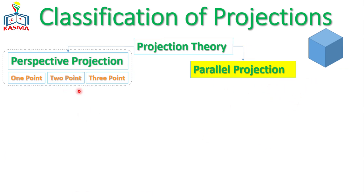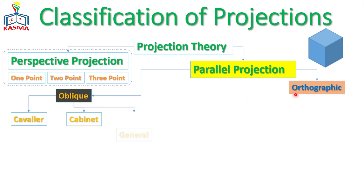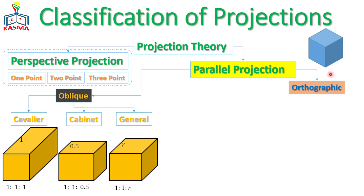In the parallel projection category, there are two types: oblique projection and orthographic projection. The main difference between them is the axis orientation with respect to the projection plane. The oblique projection has three axes — one horizontal, one vertical, and one slanted — whereas the orthographic projection has one vertical axis and two slanted axes, with no horizontal axis.